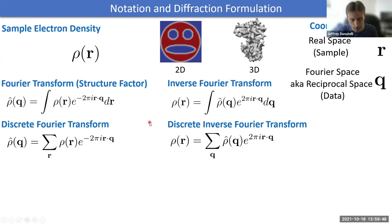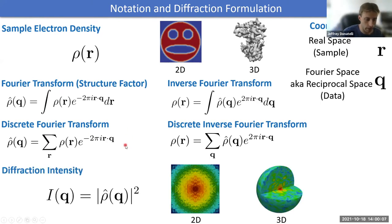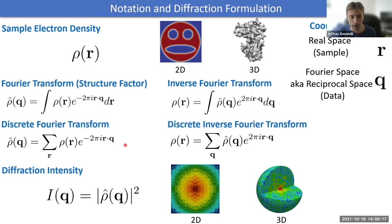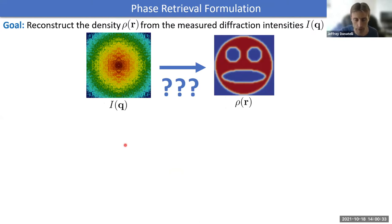For numerical computation, things must be discretized on a grid, requiring the discrete Fourier transform — turning integration into summation. The diffraction intensity I(Q) is the thing actually measured in experiments: it gives the squared magnitude of the Fourier transform, |ρ̂(Q)|². The goal is then to reconstruct the density ρ from the measured intensity function I(Q), which gives only the squared magnitude of its Fourier transform.